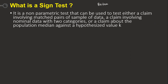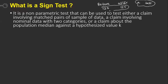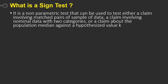For example, I am having data called before and after a test. Suppose I'm doing a test for a patient and finding out their BP — before it is 120 and it increased to 125, etc. This is a paired value because it is taken for patient one. This is matched pairs of sample data, or a claim involving nominal data with two categories — whether this is better than that. That is where we use this sign test.